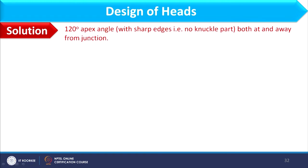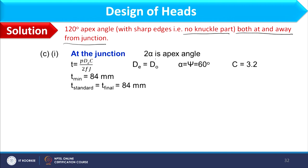Part C involves a conical head with a 120° apex angle and a sharp edge — no knuckle part. We need thickness at and away from the junction. With apex angle 120°, α = 60°. Using the thickness expression where P is design pressure and DE is the outer diameter of the head (taken equal to the shell), C is found from table 3.6 where ψ = α = 60°.